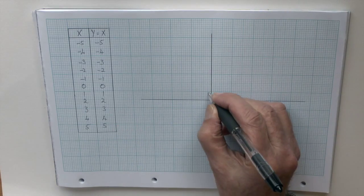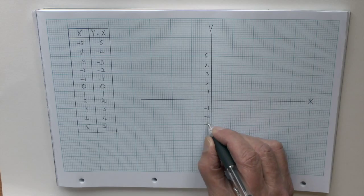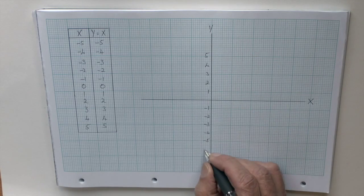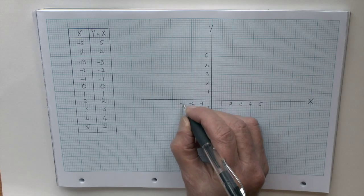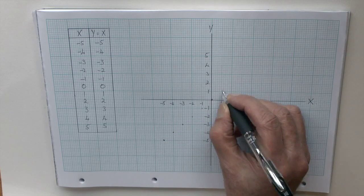It's usually necessary to plan out the scale carefully, so that as much of the graph paper is used as possible. That means the graph can be as accurate as possible. Here, however, the scale is simple because the numbers are small, 0 to 5, 0 to minus 5 in both instances.